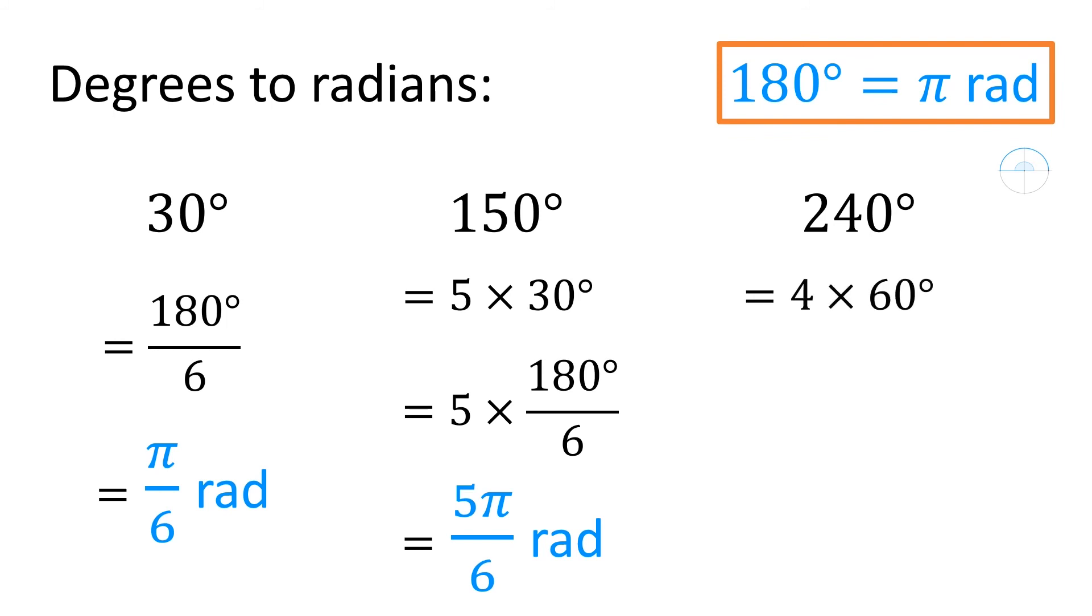So, it's 4 times 60, that's 4 times π/3, or 4π/3 radians.